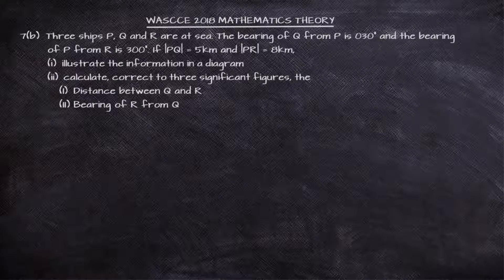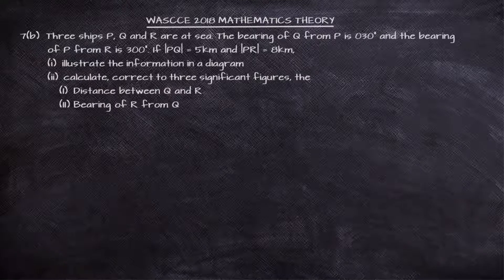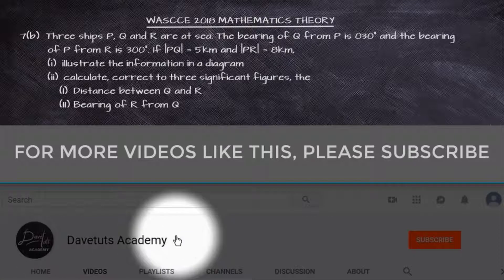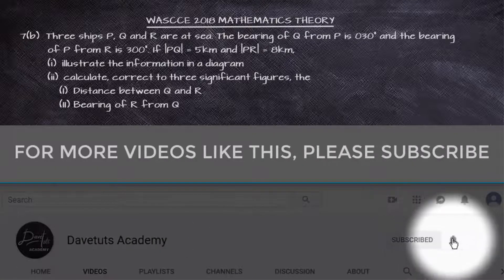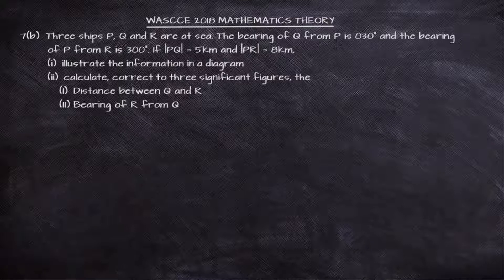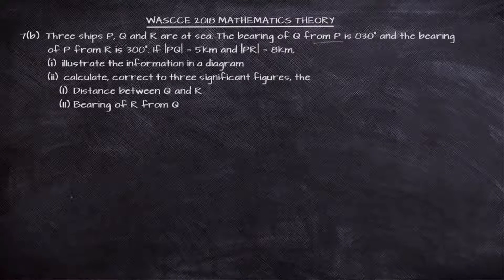Here is a question on bearing and distances. We are told that three ships P, Q, and R are at sea. The bearing of Q from P is 030 degrees, and the bearing of P from R is 300 degrees. PQ is given as 5 kilometers and PR is 8 kilometers. Our first task is to draw this in a diagram.